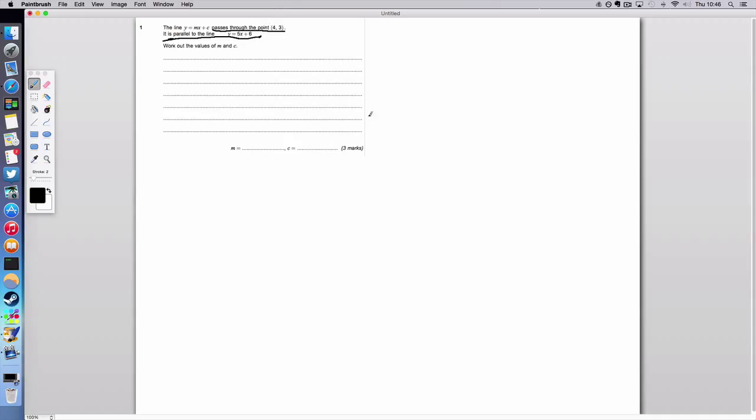Now from previous lessons we've found that if we have two lines say, we have two sets of axes here. We've got an x and we have a y axis. Okay, and we have say the line y equals x going through here with a gradient of 1 and then we have the line y equals x plus 2.